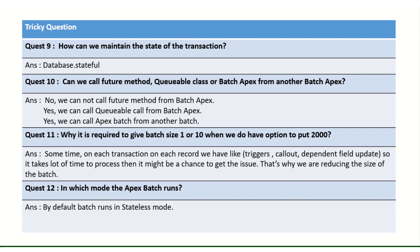Can we call a future method, queueable class, or another batch class from a batch? We cannot call a future method from a batch. However, we can call a queueable from a batch. We can also call another batch class from the finish method of an existing batch, allowing us to chain batches in sequence.